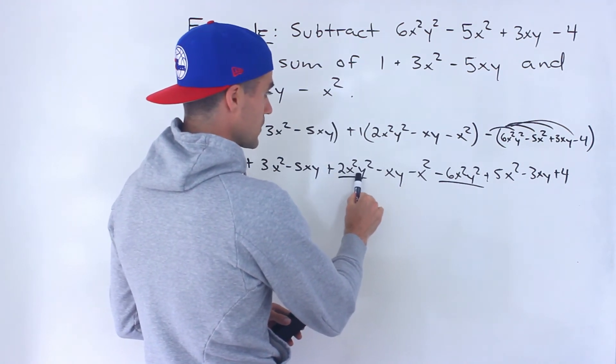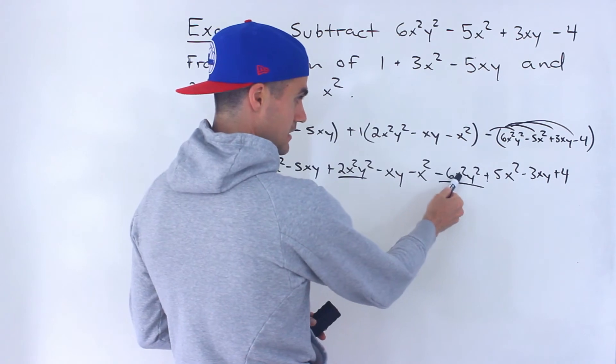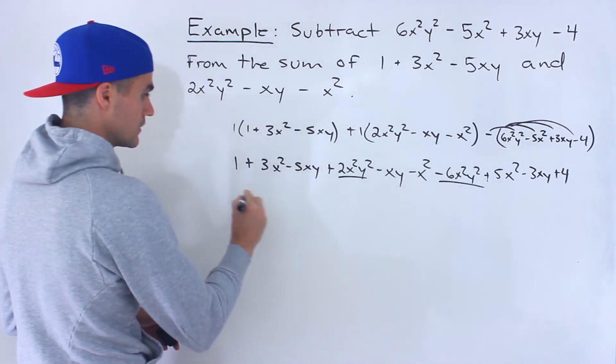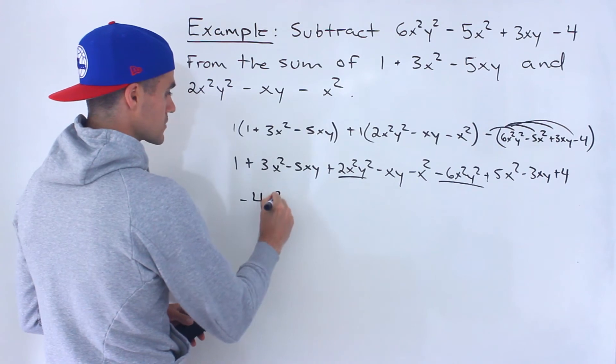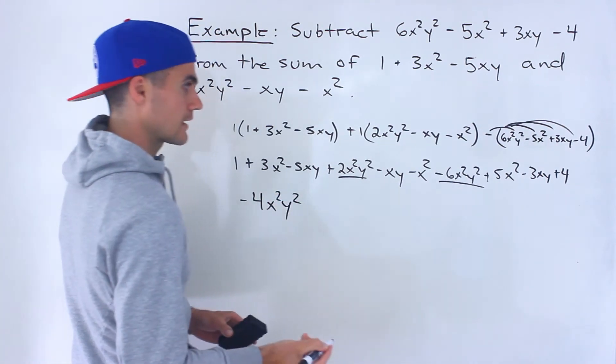So we got 2x²y² - 6x²y², which would give us -4x²y² like that.